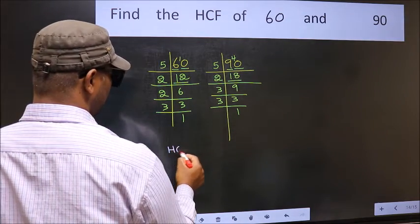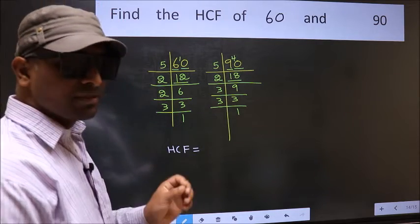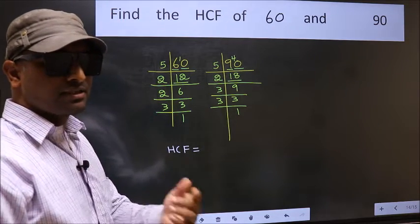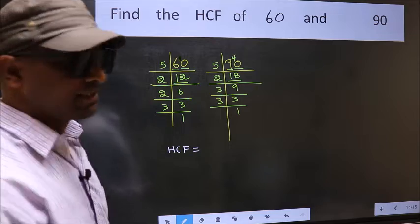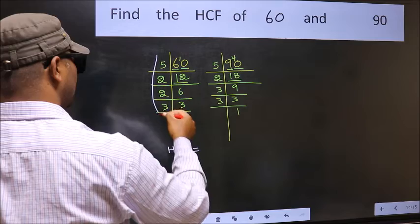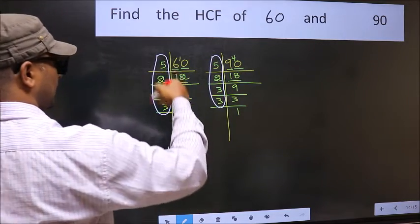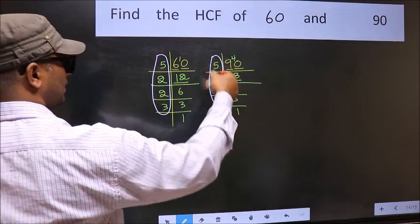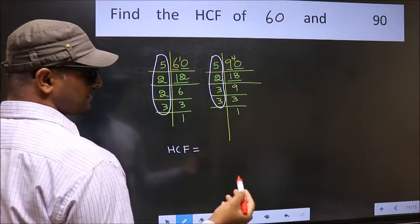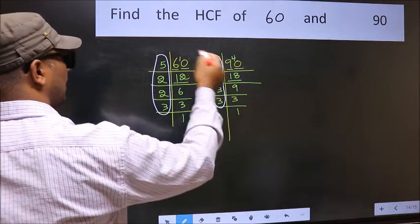Therefore our HCF is, HCF is the product of the numbers which should be present in these two places. That is here and also here. Here and here. So now let us find the numbers which should be present here and here.